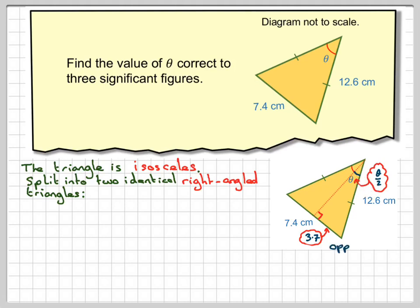So labelling up the sides, this is the opposite side and this is the hypotenuse and this would be the adjacent. So we've got the opposite hypotenuse and we want to find the angle, so we're going to use sine opposite over hypotenuse.